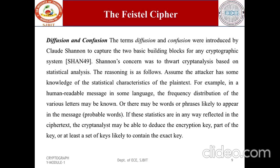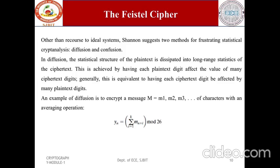If these statistics are in any way reflected in the ciphertext, the cryptanalyst may be able to deduce the encryption key, part of the key, or a set of likely keys. In what Shannon refers to as a strongly ideal cipher, all statistics of the ciphertext are independent of the particular key used. Shannon suggests two methods for frustrating statistical cryptanalysis: diffusion and confusion.